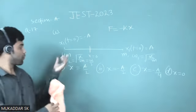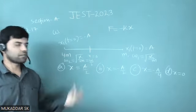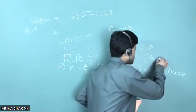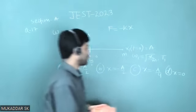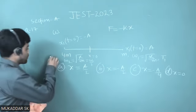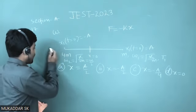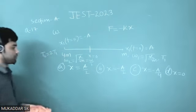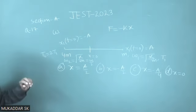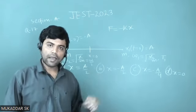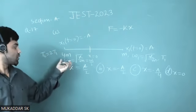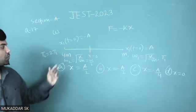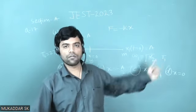The frequency of oscillation of the 4m mass is half the frequency of the m mass. This means if the time period of oscillation of mass m is T₁, then the time period of the 4m mass T₂ = 2T₁, because there is an inverse relationship between time period and angular frequency. Since ω₂ is half of ω₁, T₂ is twice T₁.